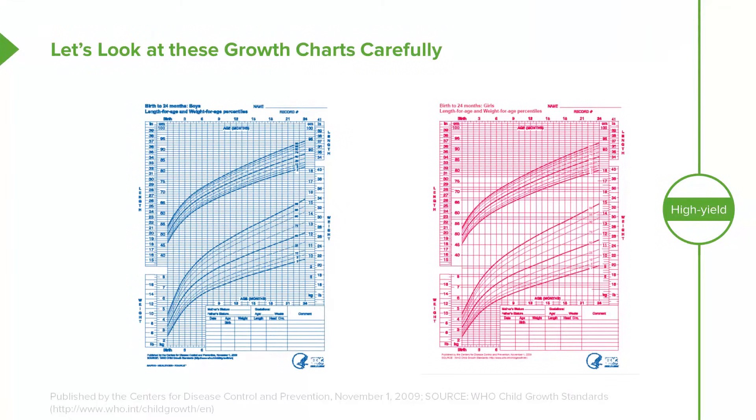Here are two growth charts that we'll use. We usually use the WHO or World Health Organization charts until the age of 2. There's one for boys and one for girls. We'll plot the height and weight of these children to make sure things are going okay.